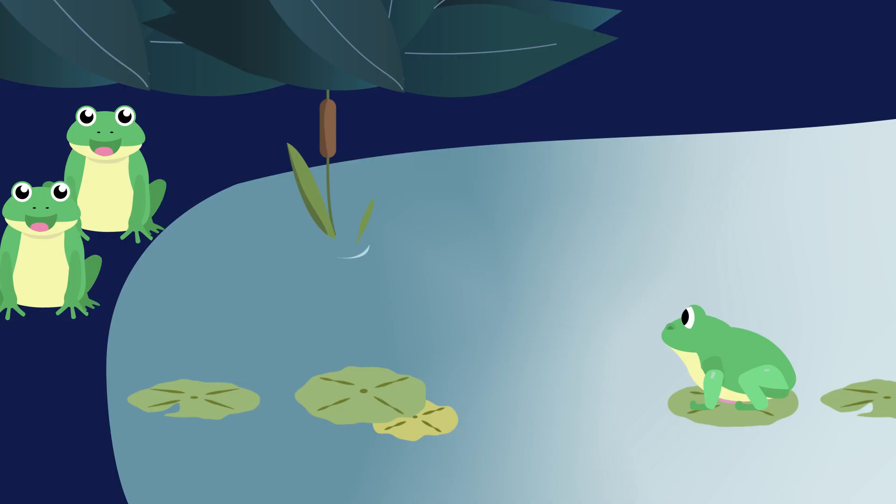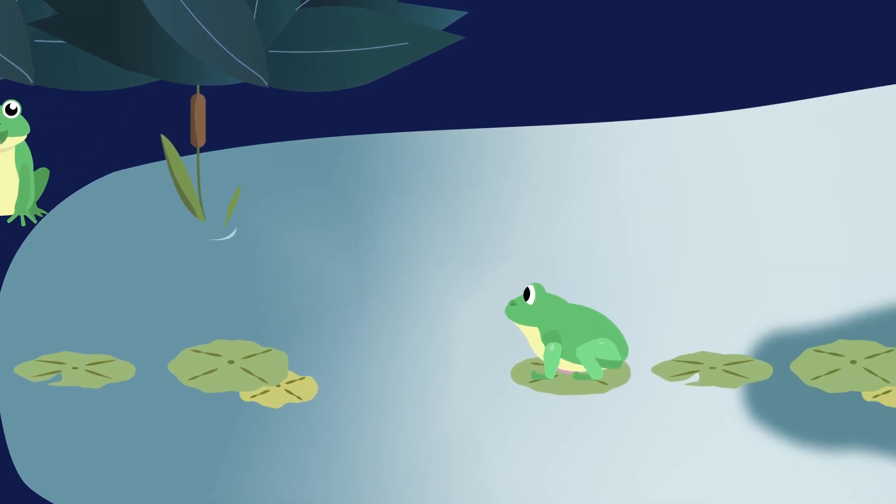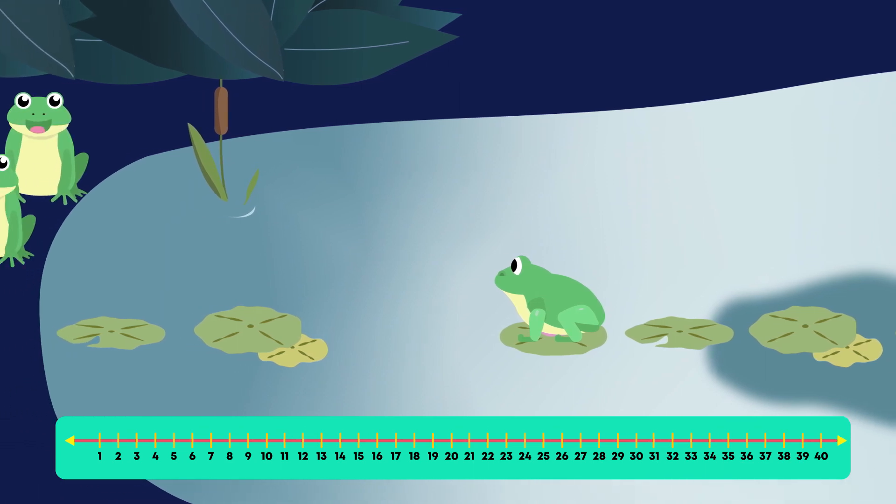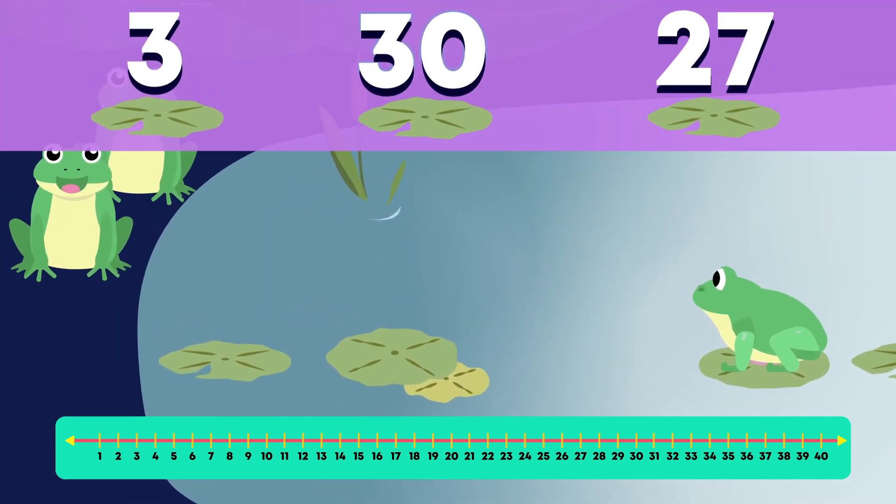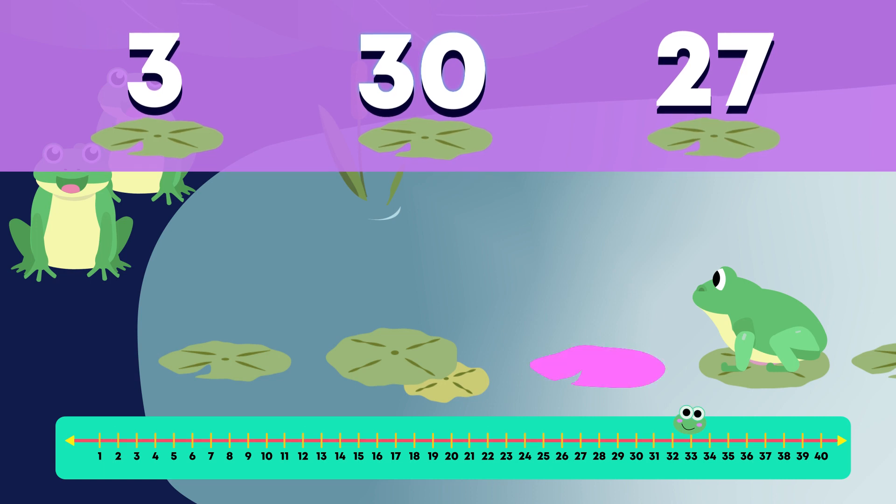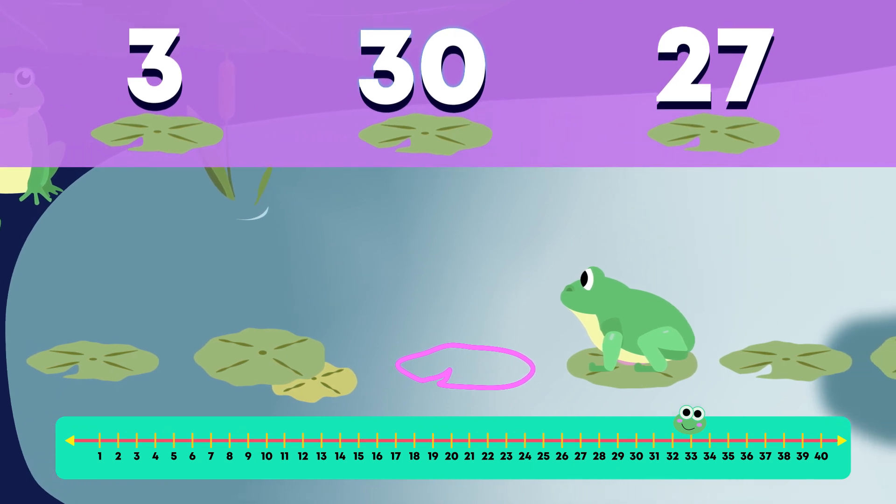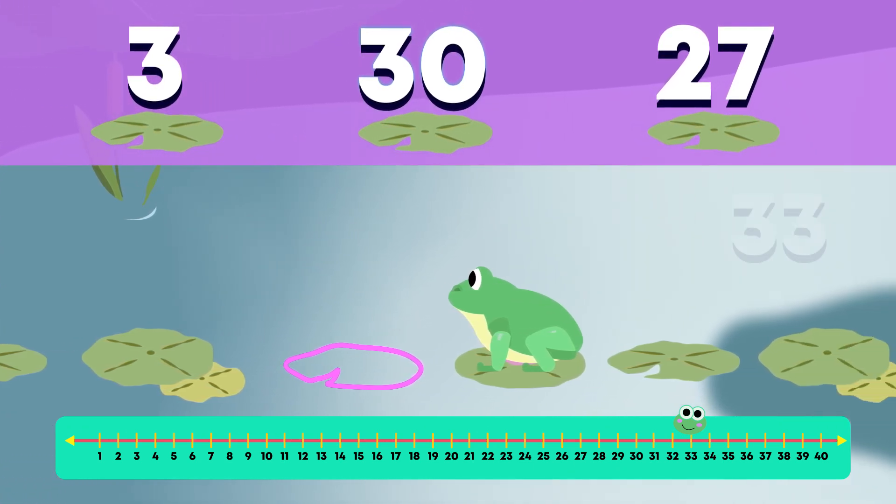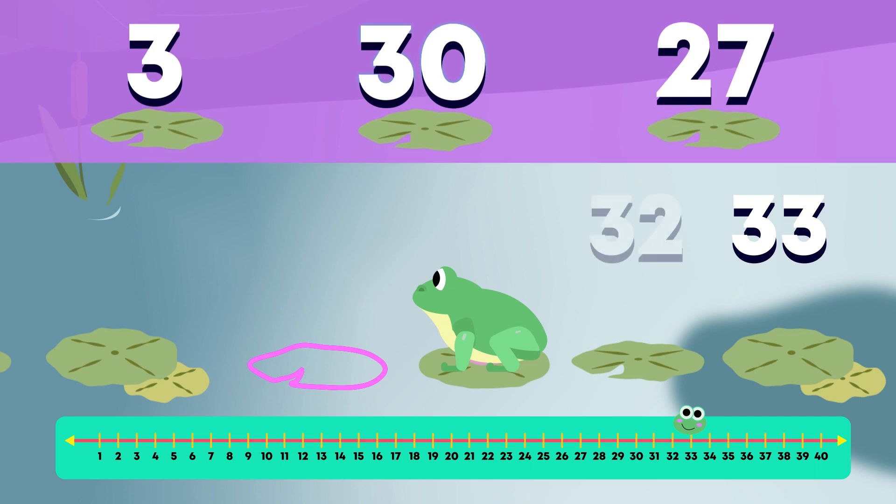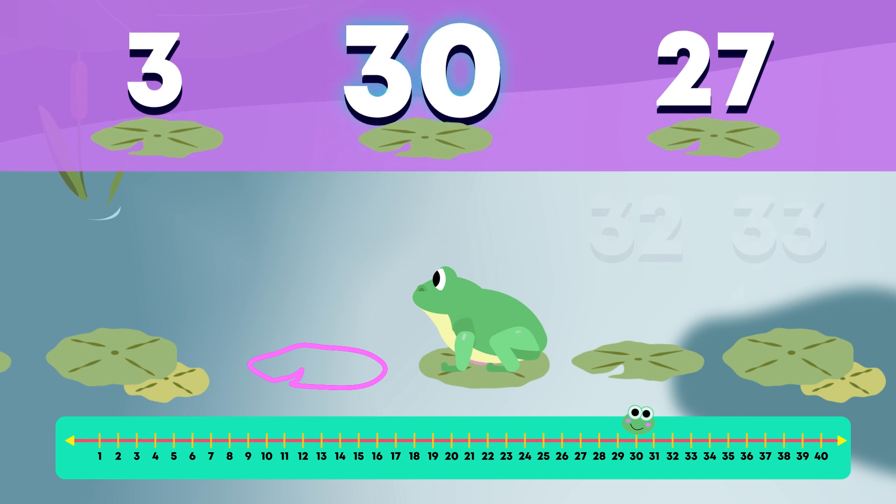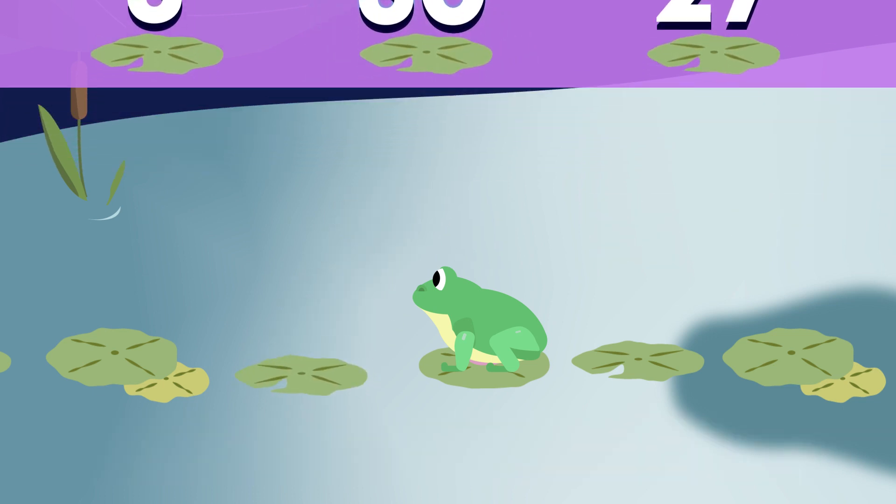A lily pad is missing and this frog can't get to its friends. These lily pads are counting back in 3s because each time the numbers get 3 less. Choose the correct lily pad that needs to go here. To count back 3 from 33, I need to take away 3. 33 count back 3 is 32, 31, 30. It's this lily pad. Fantastic counting friends.